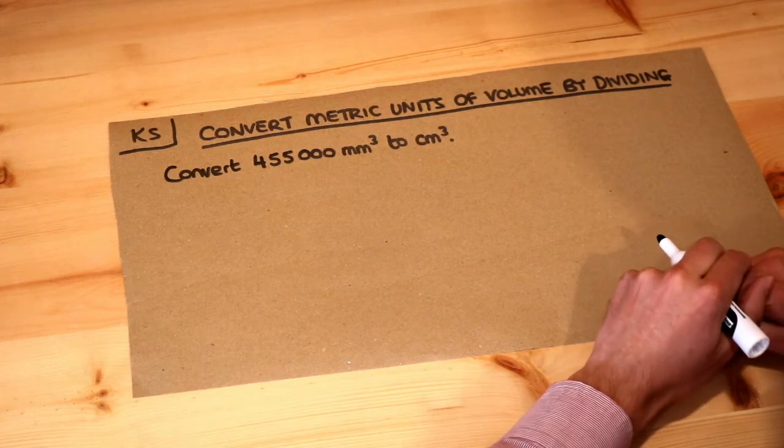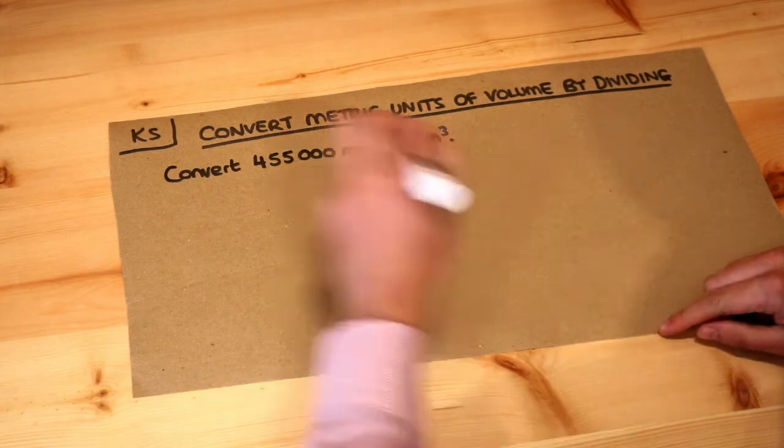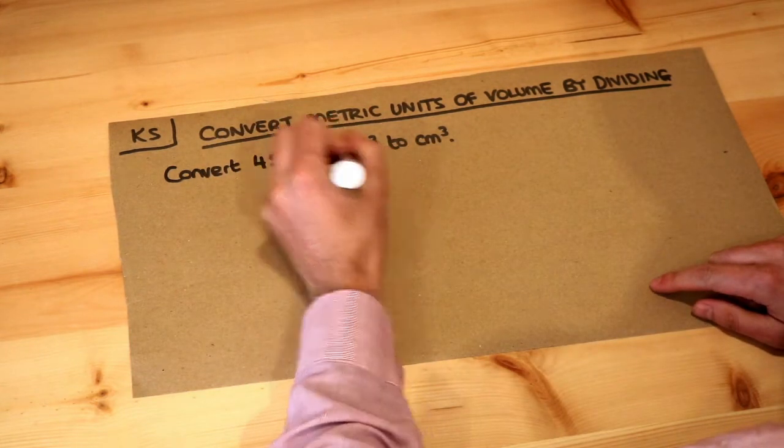Hello and welcome to this Dr. Ross Mass key skill video on converting metric units of volume by dividing. We want to go from millimeters cubed to centimeters cubed.